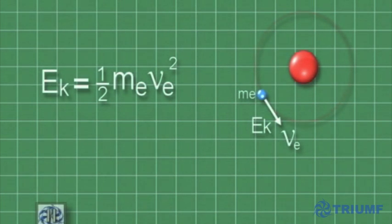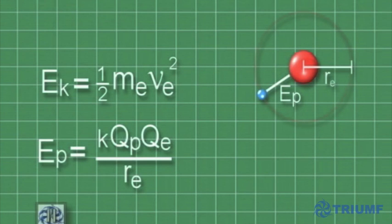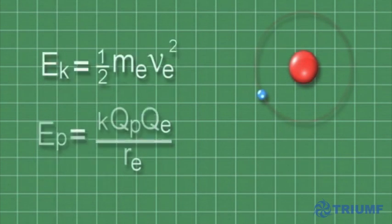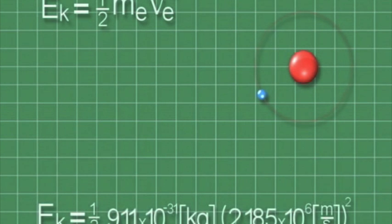Now let's find the kinetic and electrical potential energy of the orbiting electron. We begin by calculating the kinetic energy using the value we determined for the velocity, and plugging in the known value for the electron's mass.